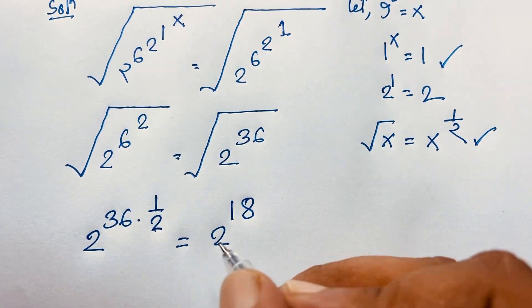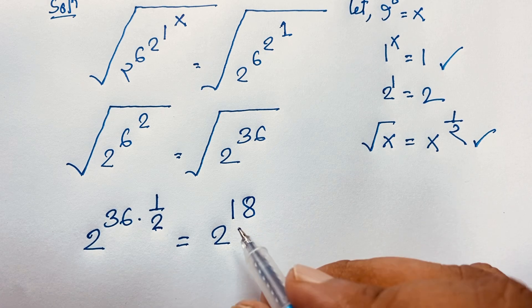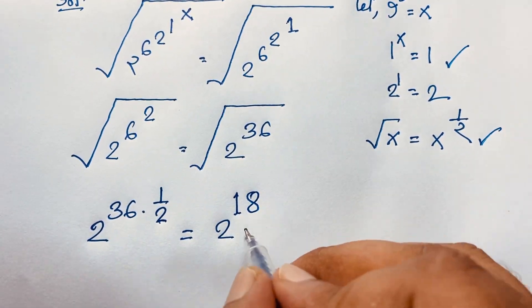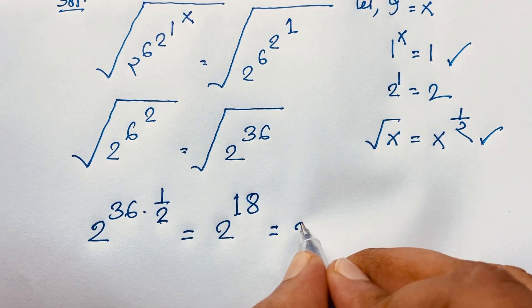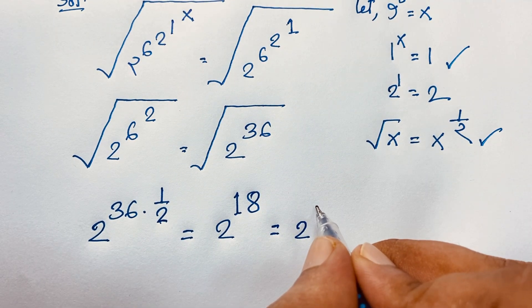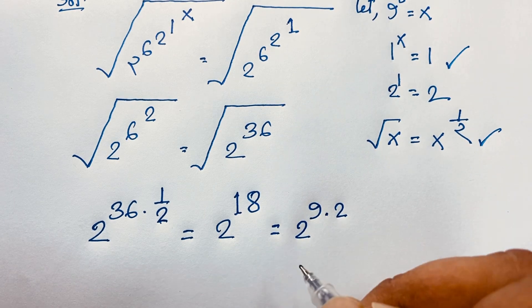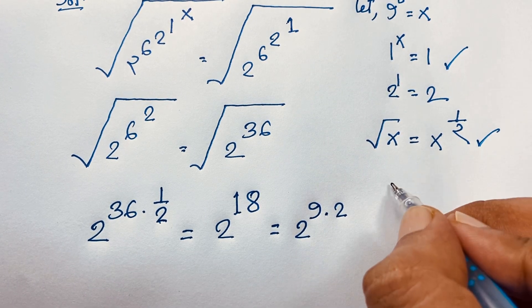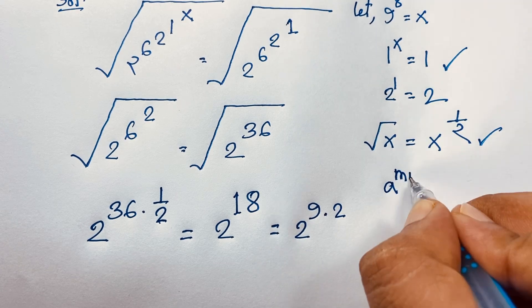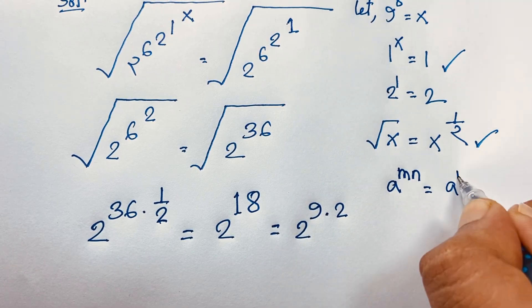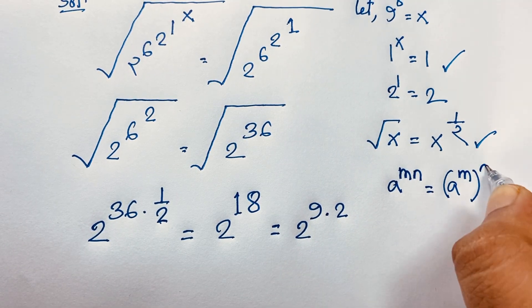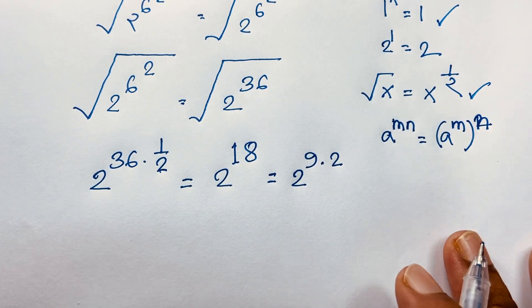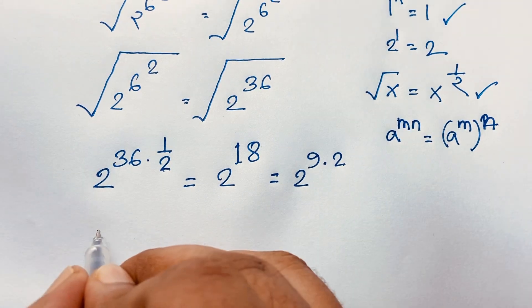So 36 divided by 2 equals 18, meaning we get 2 to the power 18. Now, how to simplify this exponential expression? We can write 2 to the power 18 as 2 to the power 9 times 2 — since 9 times 2 equals 18. Using the exponential formula: a to the power m·n equals (a to the power m) whole to the power n.